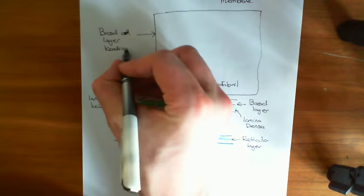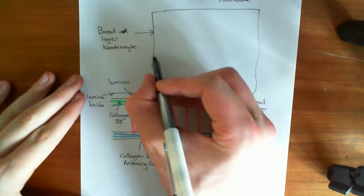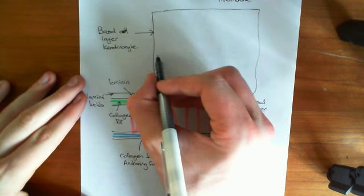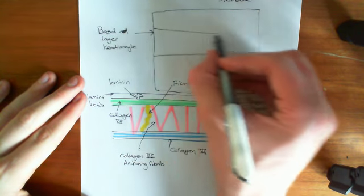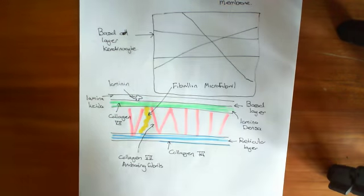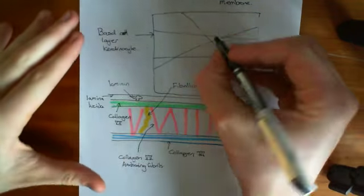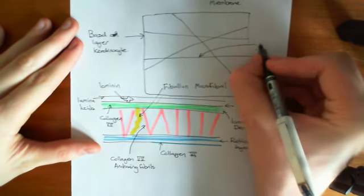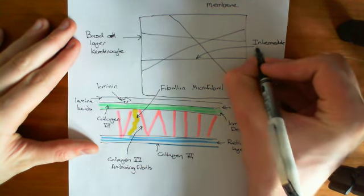So, basal layer keratinocyte — how is this attached to this basement membrane? Well, the basal layer keratinocyte has a cytoskeleton. It's got loads and loads of keratin fibres within it, which are holding the cell together. Just like we have a skeleton, the cell has a rigid structure of chains that hold it together and give it structure. These are called intermediate keratin filaments.